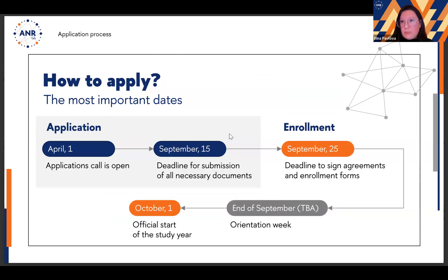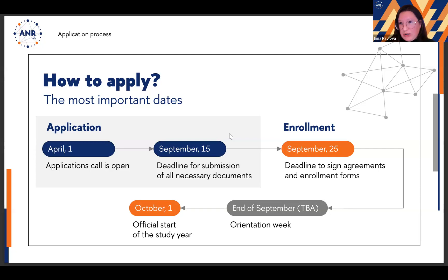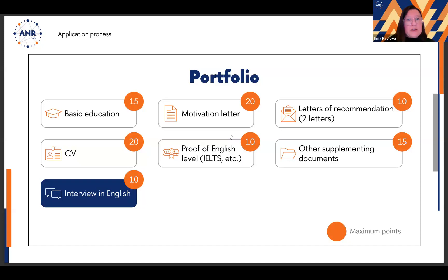Here is the timeline for the most important application dates. A major date is September 15th — the final deadline to submit all necessary documents and register in the system. Then in late September there's time to review portfolios, check documents, and sign contracts. Studies start October 1st, but before that we have one week at the end of September devoted to organizational discussions about the program.